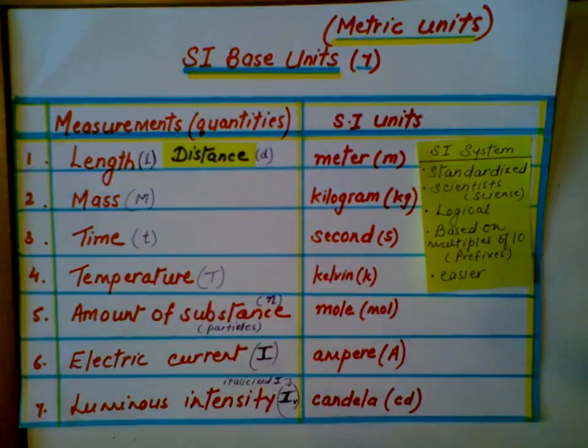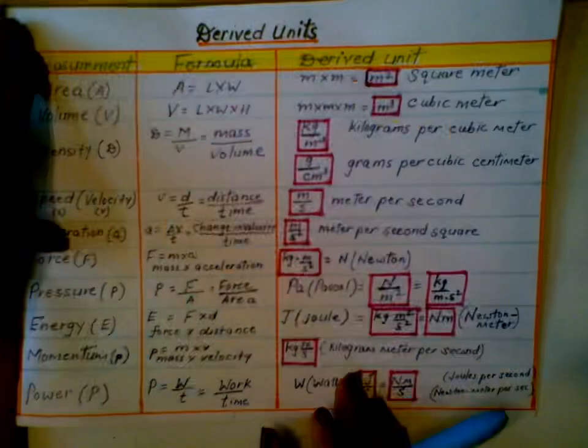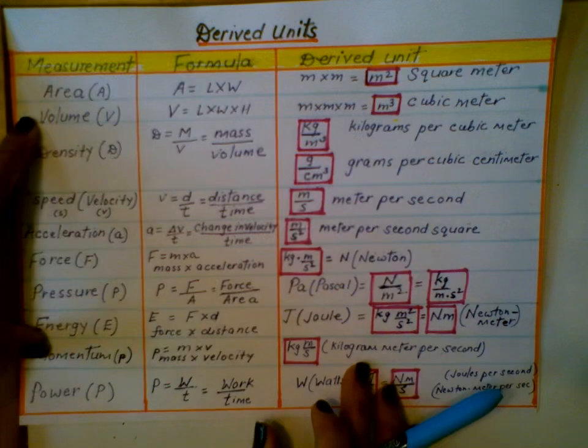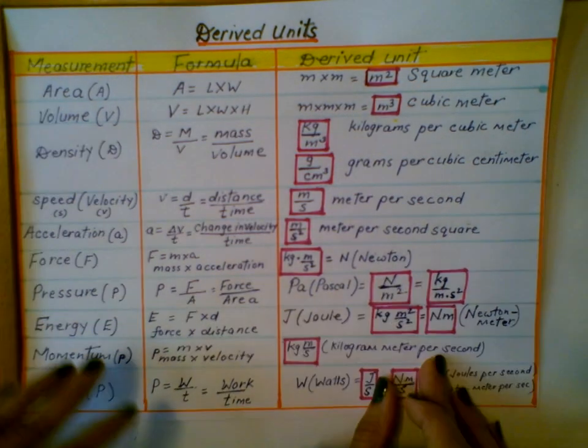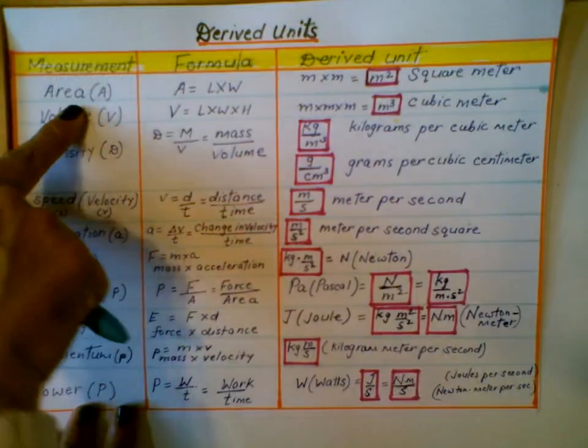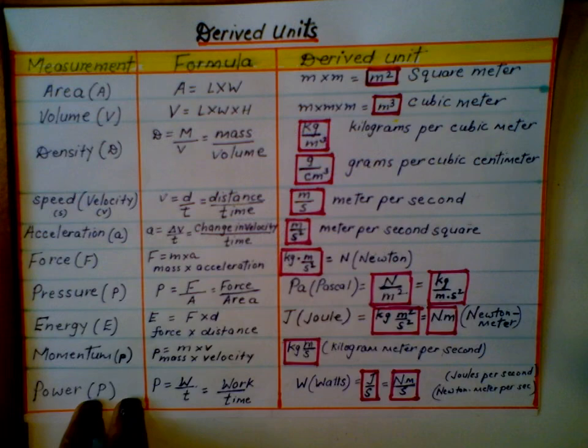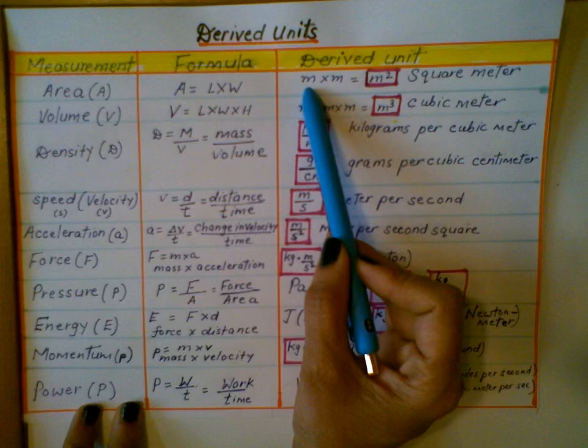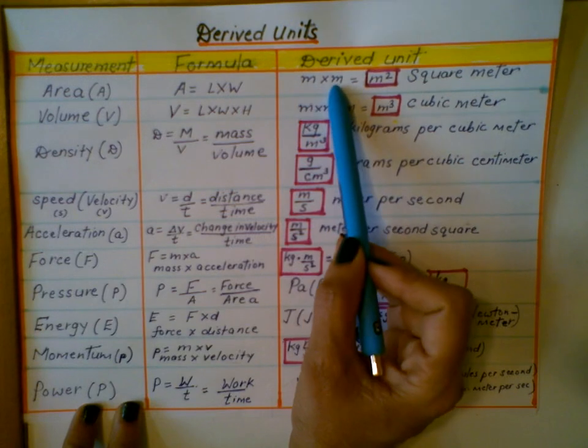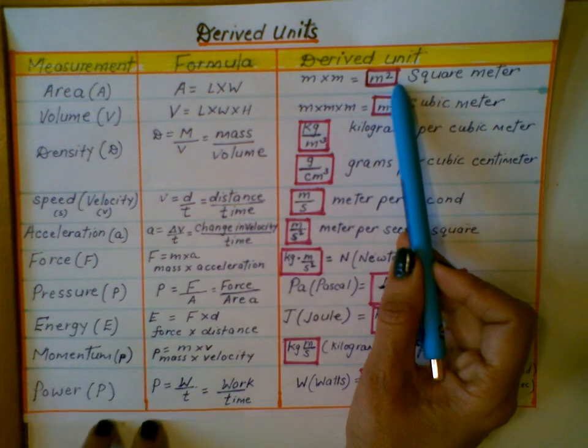Next part is the derived units. Derived units are formed or obtained by multiplying or dividing two or more SI base units. Area is a measure of two-dimensional surface, a flat surface. You're multiplying two same SI base units: meter times meter. What does that give you? Meter squared.